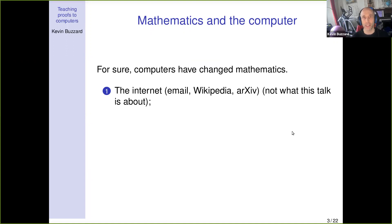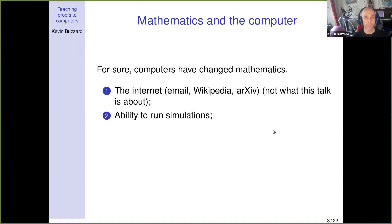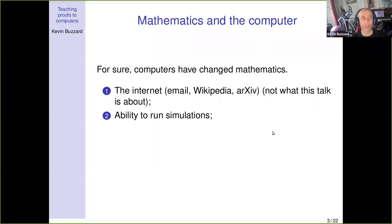Computers have completely revolutionized mathematics in lots of ways. Things like Wikipedia and the arXiv have hugely changed the way mathematicians work. But I'm more talking about mathematicians using computers as a tool to do mathematics. In applied mathematics in particular, people can run simulations, look for new phenomena, approximate solutions, and look at answers to ten decimal places and have a brilliant idea.